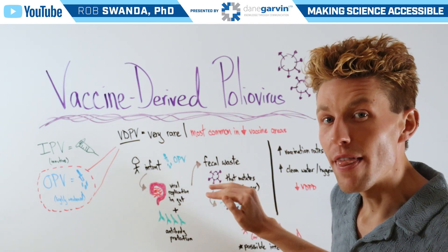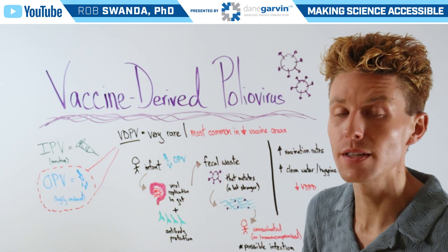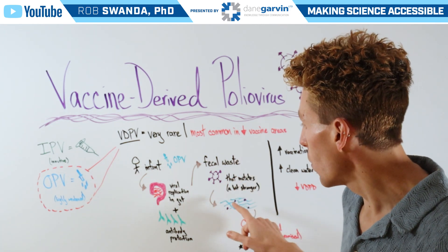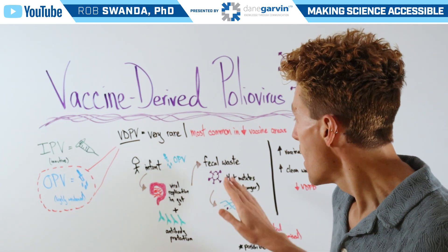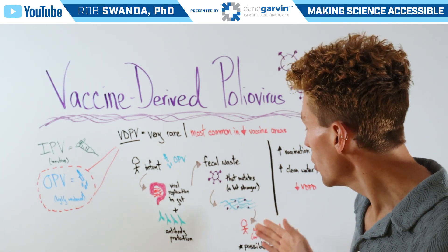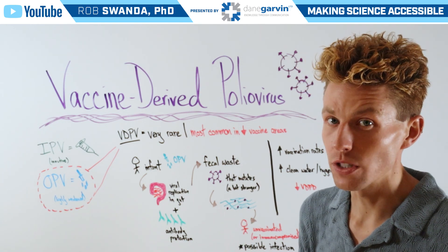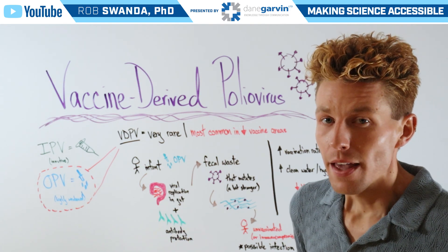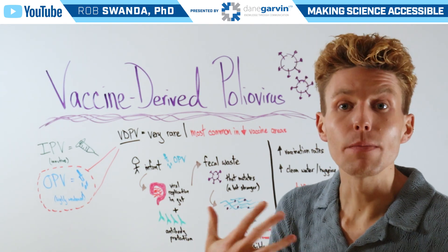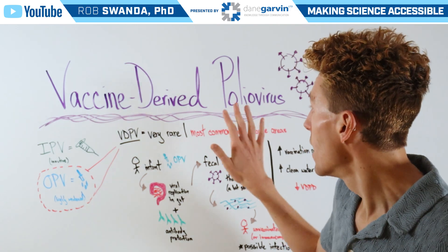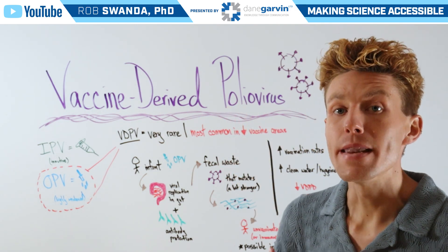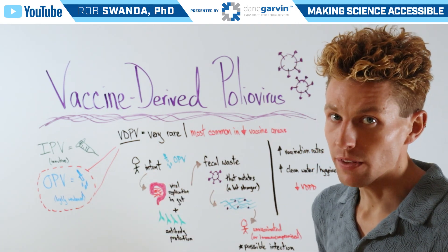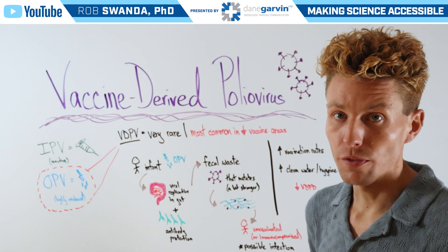On rare occurrences, that weakened form can have some mutations allowing it to be a little bit stronger. When entering wastewater in areas where there's poor sanitation, that virus that's now a little bit stronger could come in contact with an unvaccinated individual — an unvaccinated infant, an unvaccinated adult, or somebody who is immunocompromised and doesn't have protection against polio virus — leading to them becoming infected with that stronger form of the original weakened OPV, leading to vaccine-derived polio virus.